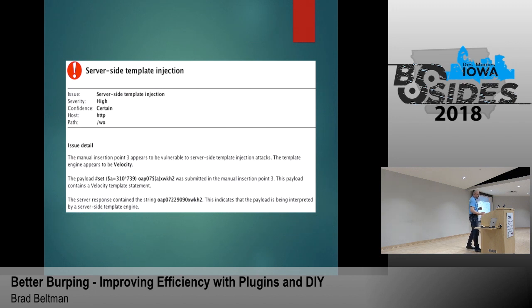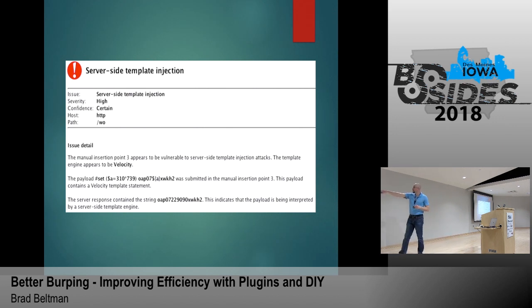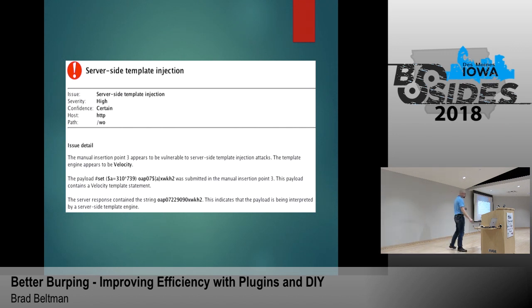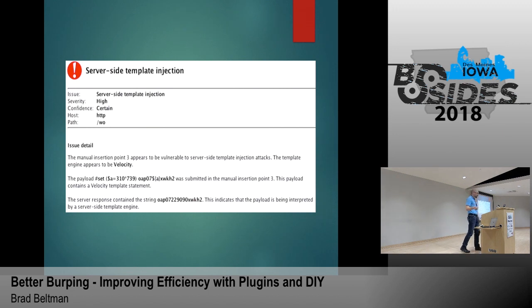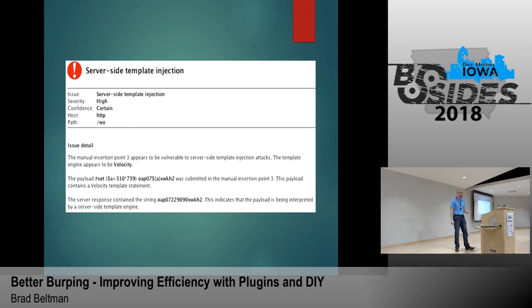Here's an example from a recent engagement where Active Scan++ actually fingerprinted server-side template injection. You can see in bold it's saying it found something that looks like server-side template injection, and it fingerprinted it as Velocity, which is an Apache product. It used the payload with a hashtag-set syntax specific to Velocity. That turned out to be a shellable situation through the application — a really interesting attack.